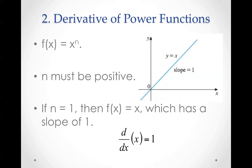Derivative of a power function: f(x) equals x to the n, where n must be positive. If n equals 1, then f(x) equals x, which is a line with a slope of 1. This is the reason why the derivative of x equals 1. That works with every function, but it's easiest to show with a line because we can easily find the slope of that line.